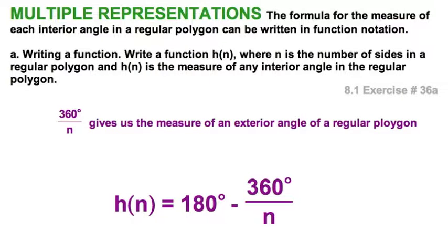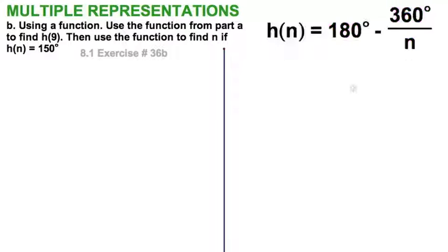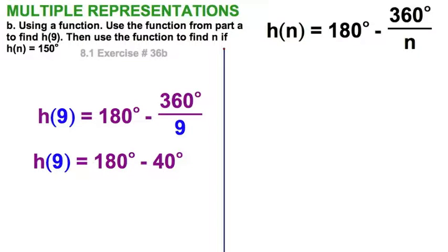Now, let's answer parts b and c. In part b, we're going to take our function here. And let's do two things. First, evaluate this function at n equals 9. That is to say, h(9) equals 180 degrees minus 360 divided by 9, or 180 minus 40. This means that in this nonagon, regular nonagon, each exterior angle is 40 degrees. And each interior angle, 140.